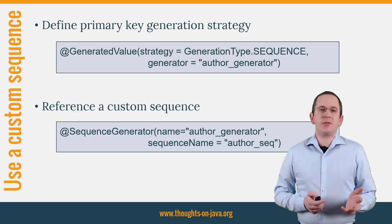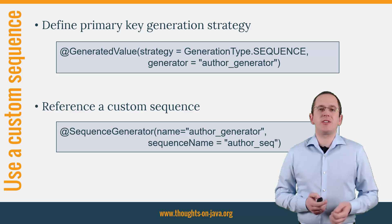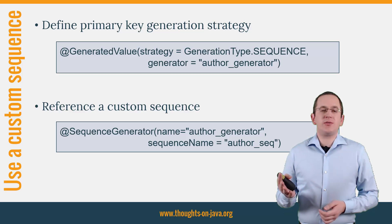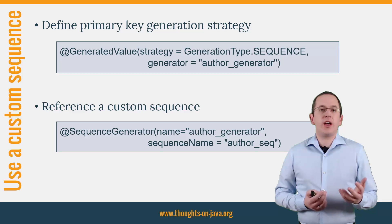The first thing you need to do is to tell Hibernate that you want to generate the primary key value. You can do that by annotating the primary key attribute with the @GeneratedValue annotation, as shown in the first code snippet. The annotation is defined by the JPA specification and it allows you to choose between different generation strategies and to reference a generator by its name.